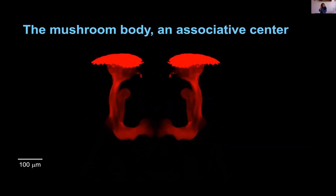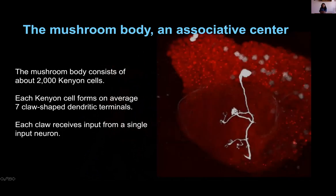We are especially interested in the mushroom body, which we haven't heard too much about at this conference. The mushroom body is this associative brain center found in the middle of the fly brain — it looks a little bit like a mushroom. It consists of 2,000 neurons called the Kenyon cells. The fly has two mushroom bodies, each consisting of about 2,000 Kenyon cells. These Kenyon cells have a very particular morphology: they extend most of their dendrites into the calyx of the mushroom body, forming claw-shaped dendritic terminals.